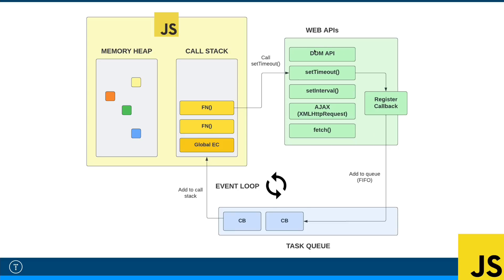In addition to those, we also have the whole DOM API. The document object, when we want to select elements and put event listeners on them, that's another API available to us that is not part of JavaScript. When you use Node.js, you don't have access to the document object model API because there is no document — it runs on the server. Fetch wasn't in Node.js for a long time, but it's getting added. But fetch is not part of the JavaScript spec. Just realize that outside of the JavaScript engine are these web APIs that we can use.